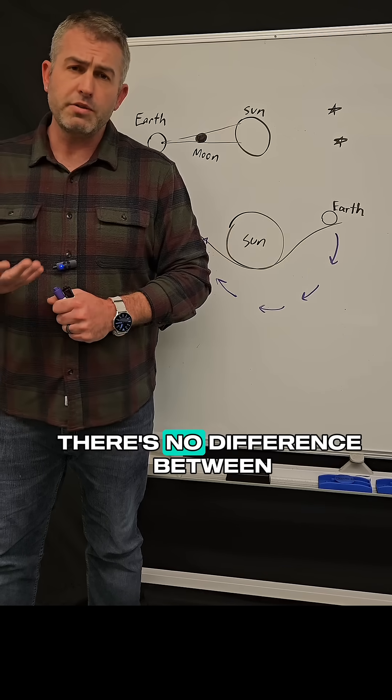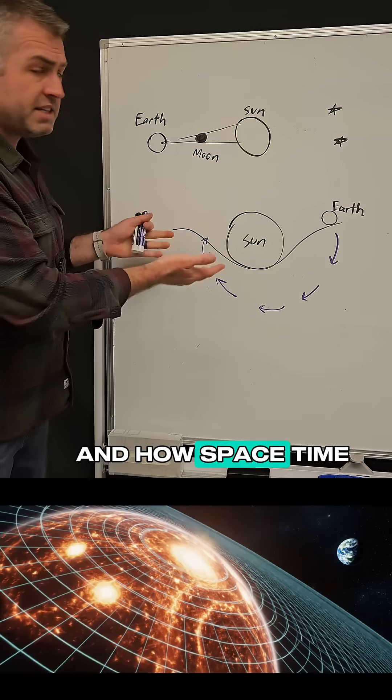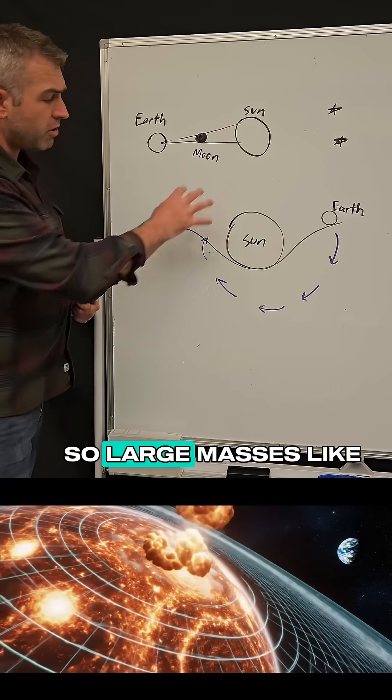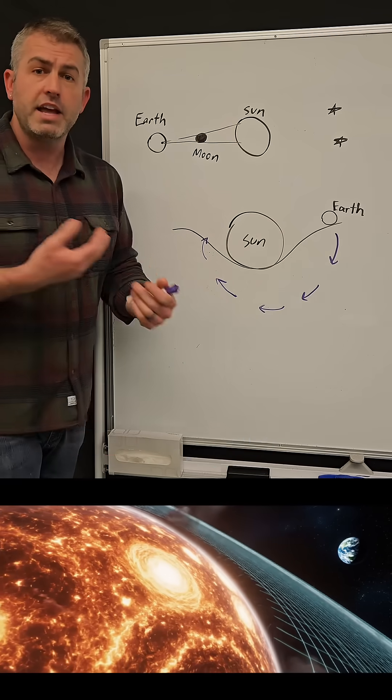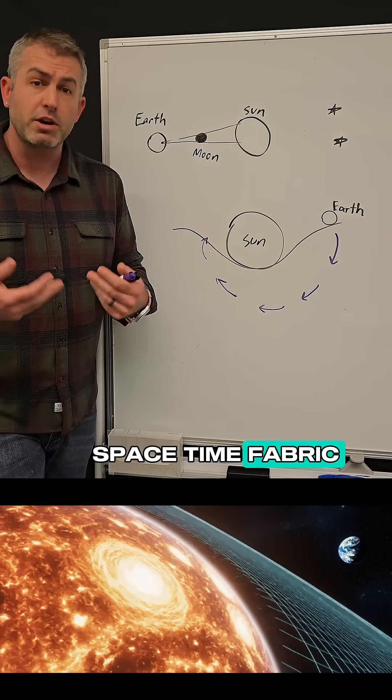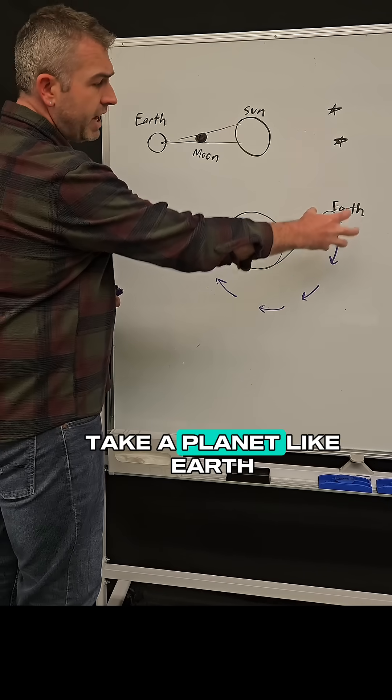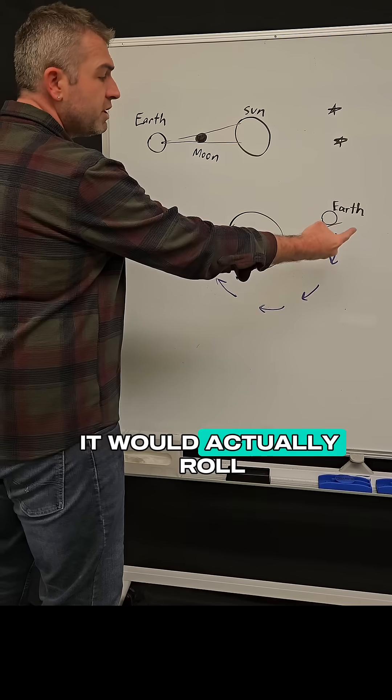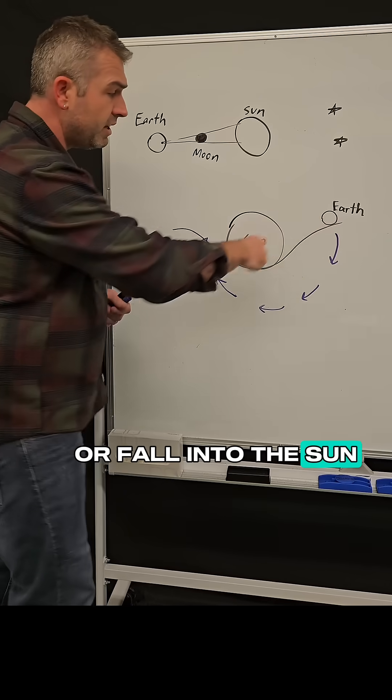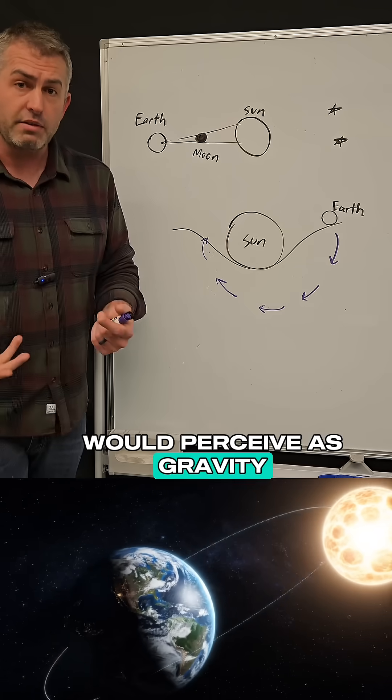Well Einstein said there's no difference between that model and how space-time actually works. So large masses like the Sun, they actually bend the space-time fabric around themselves and because space is bent, if I were to take a planet like Earth and just set it here nearby, it would actually roll or fall into the Sun and that's what we would perceive as gravity.